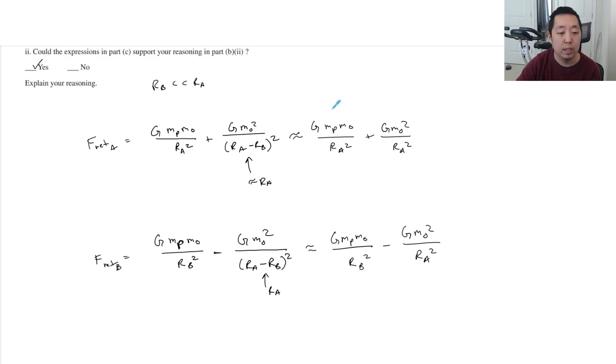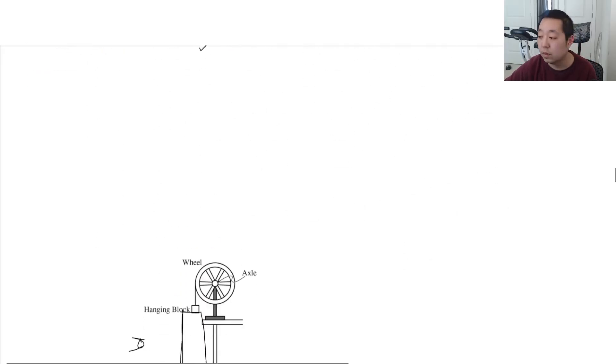I would say these three are tiny compared to GMPM0 over RB squared, and so that would tell me that F net B is greater than F net A, right? F net B.